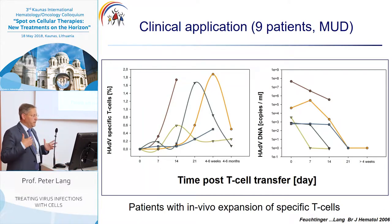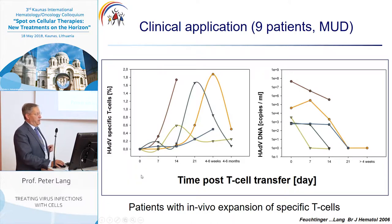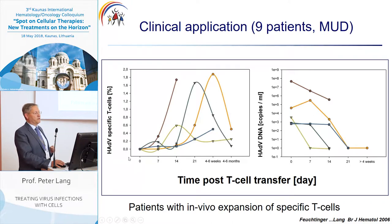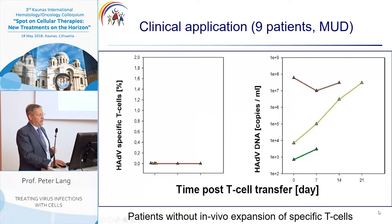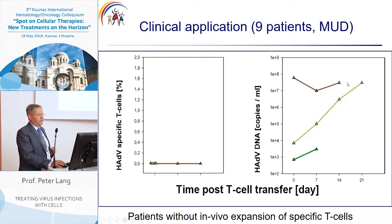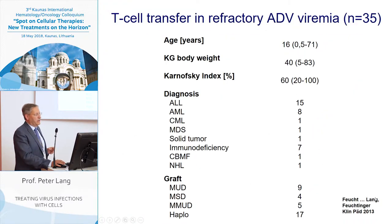This is the example for the first clinical application in nine patients transplanted from matched unrelated donors. All patients had no detectable specific T cells prior to the adoptive transfer. In five out of nine patients, we observed in vivo proliferation of the transferred T cells, and these patients were able to reduce or completely eradicate their ADV load. In patients where no in vivo proliferation occurred, nothing happened — they could not fight against their ADV load.